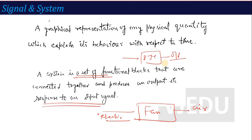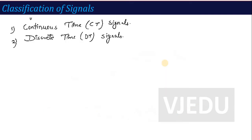This was a small definition of what we mean by signal and what is a system. Now let's talk about the classification of signals. Basically, signals are divided into two categories: one is called continuous time and one is called discrete time.